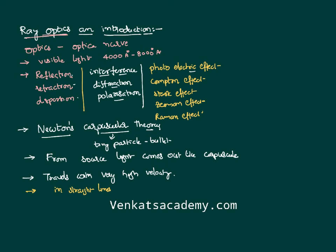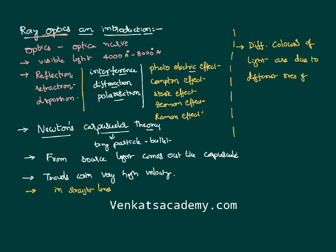If we probe further into Newton's corpuscular theory, it is understood that there are different colors of light. According to Newton's corpuscular theory, different colors of light are due to different sizes of corpuscles. It is also stated that the velocity of light in a denser medium is more than the velocity of light in a rarer medium.